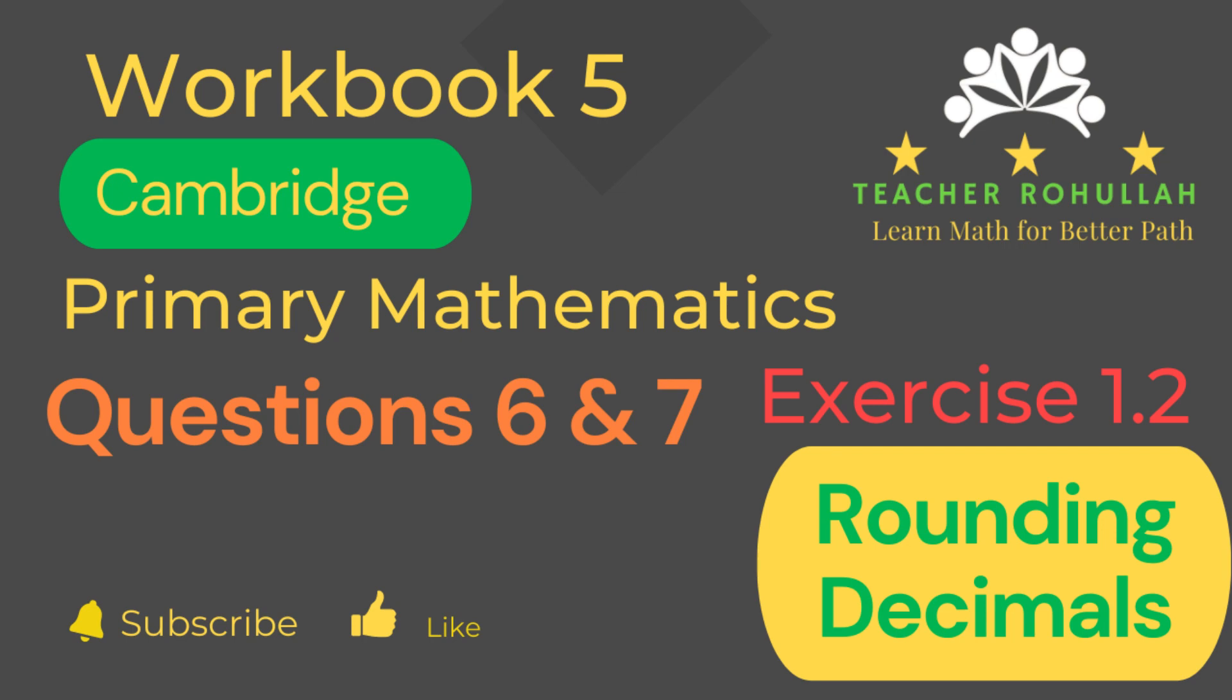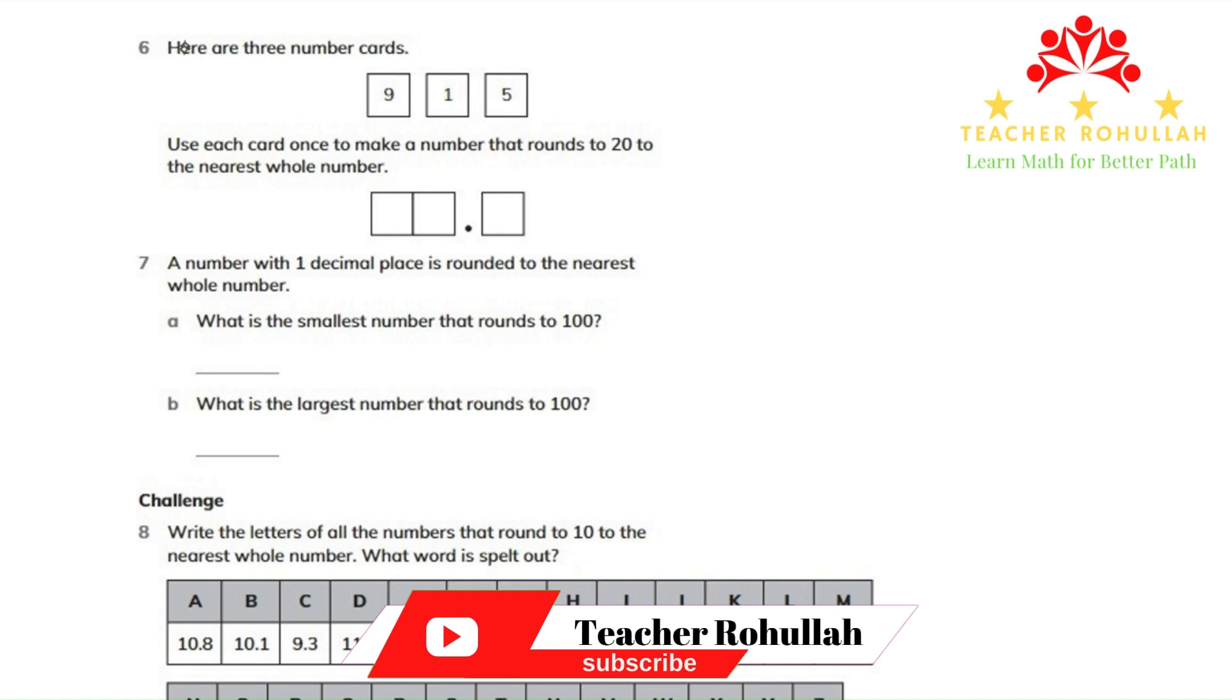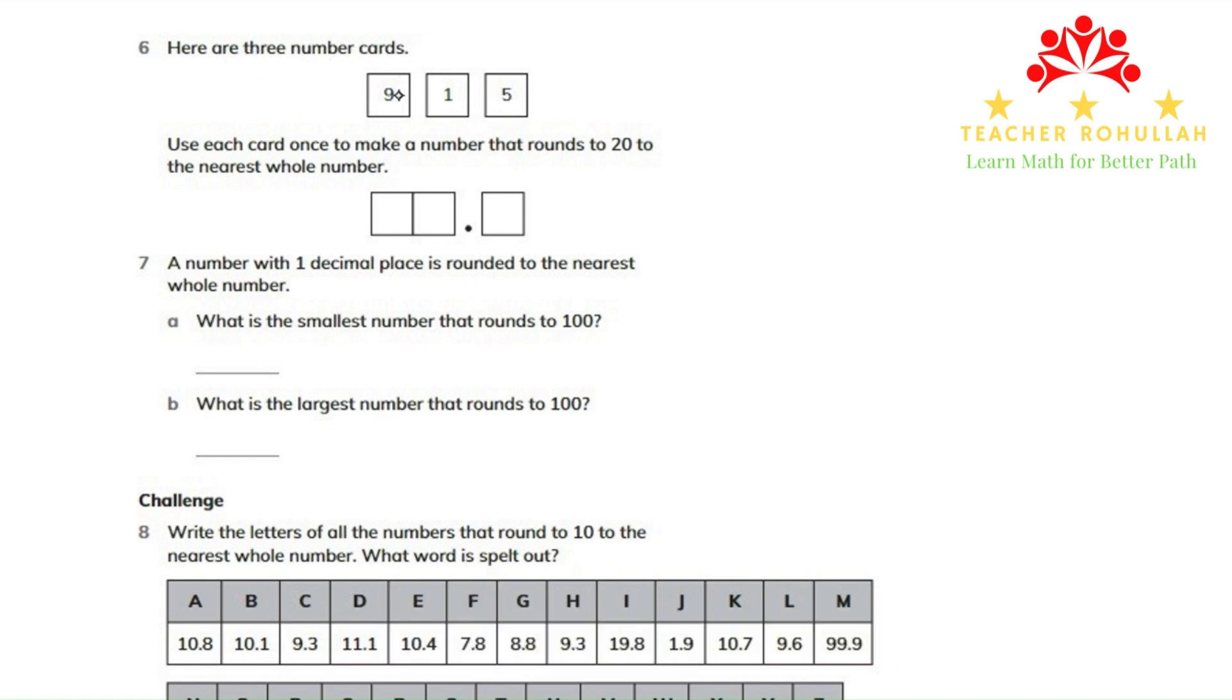Let's now move to the question and solve it. In question number six, the statement says, here are three number cards, which are nine, one and five.